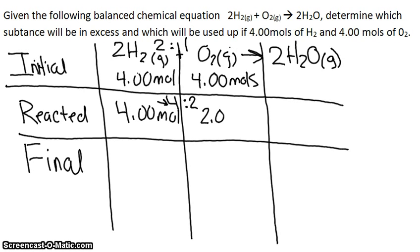And then for O2, we only go 2.00 moles are reacted because we always need to get rid of one reactant. So 4 equals 4 here. You always want to make sure one is going to be 0.00. So then you subtract the initial and the reactant to get the final.